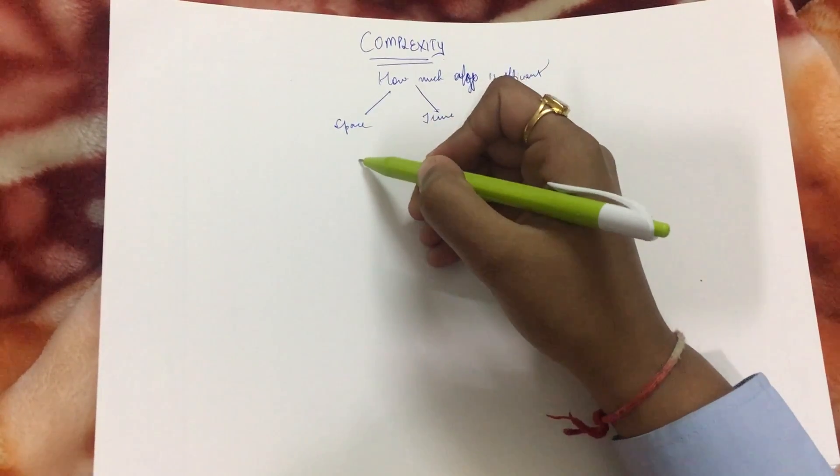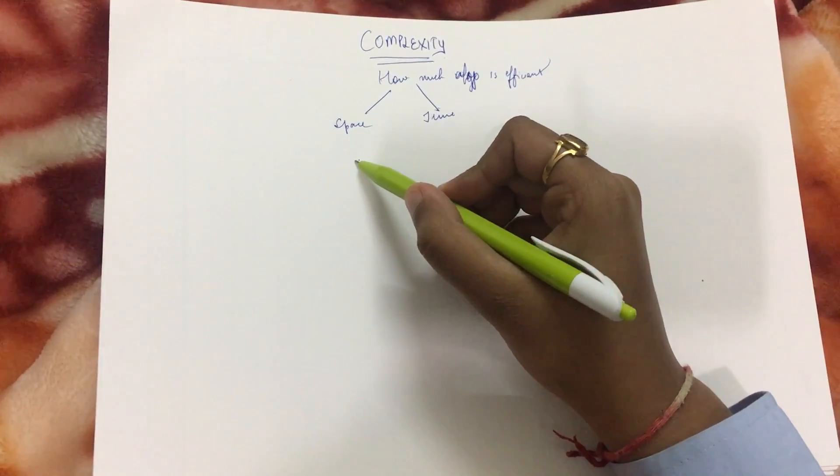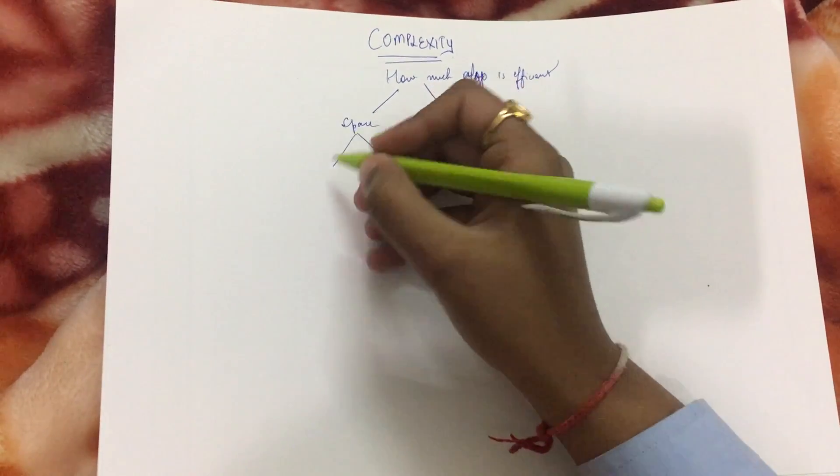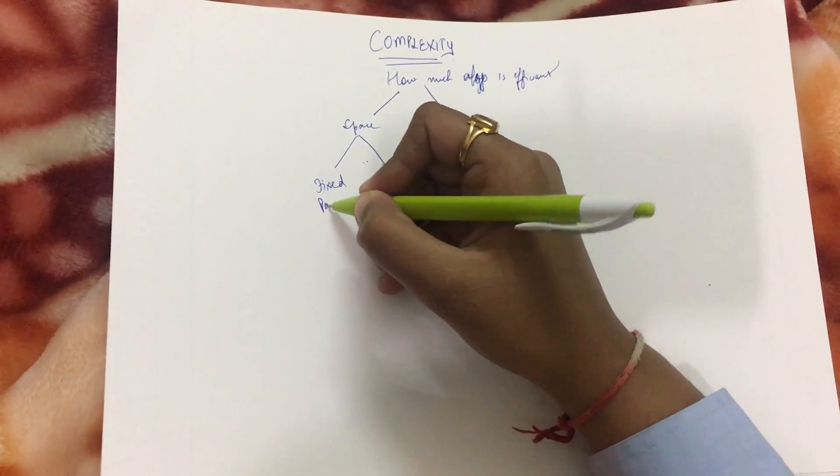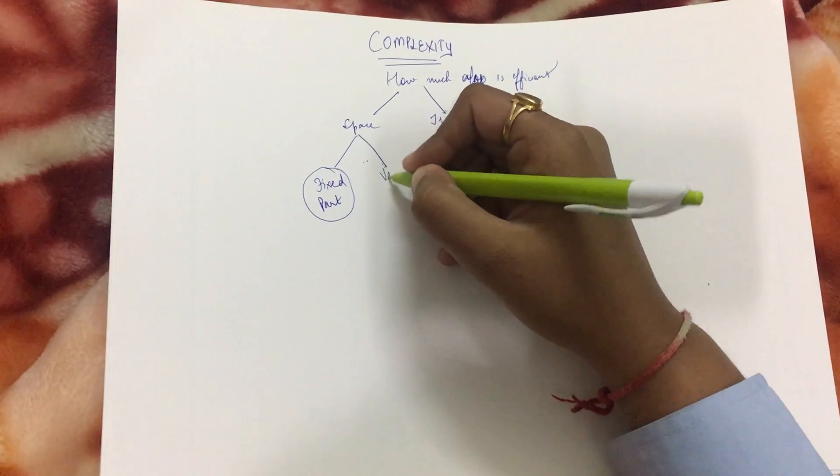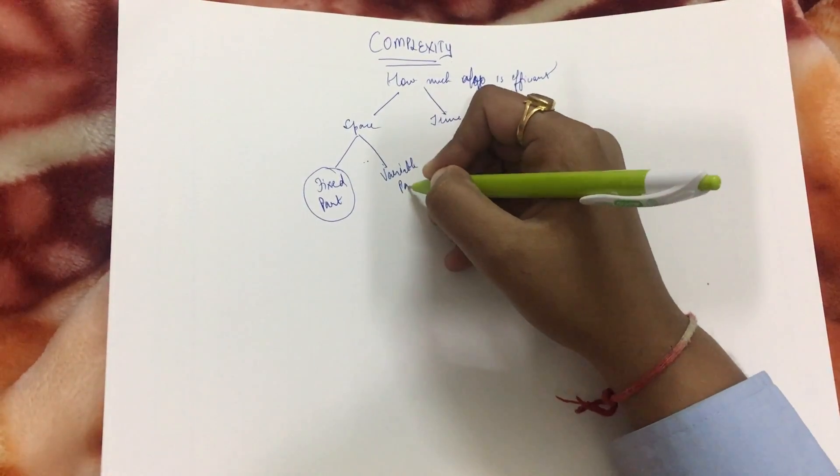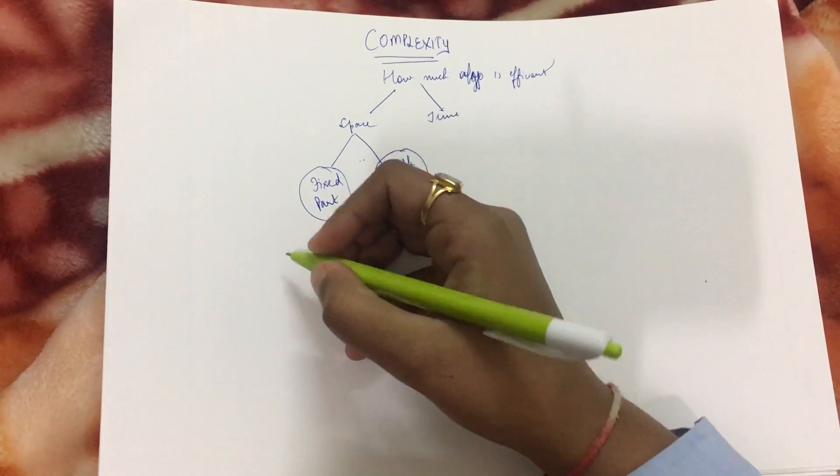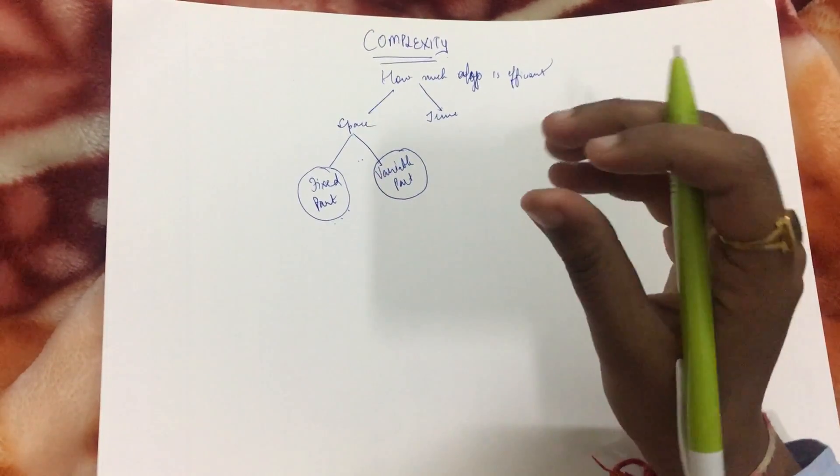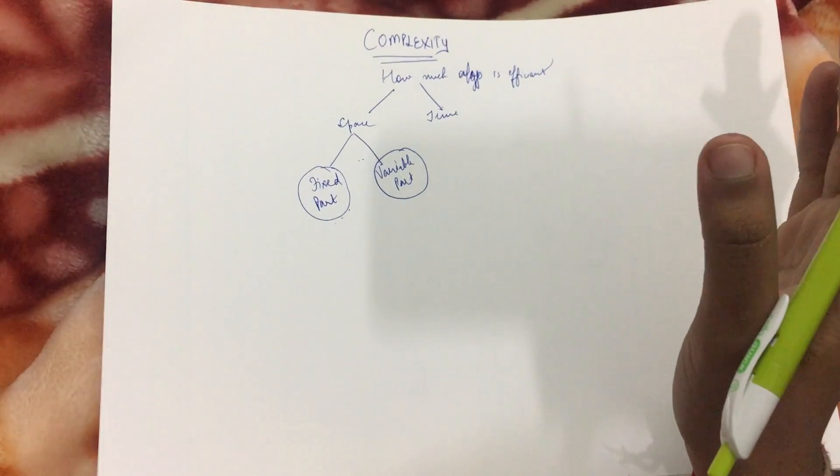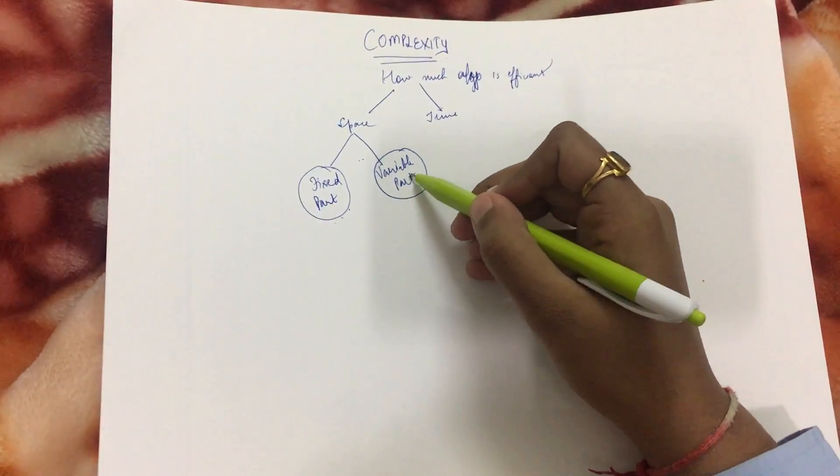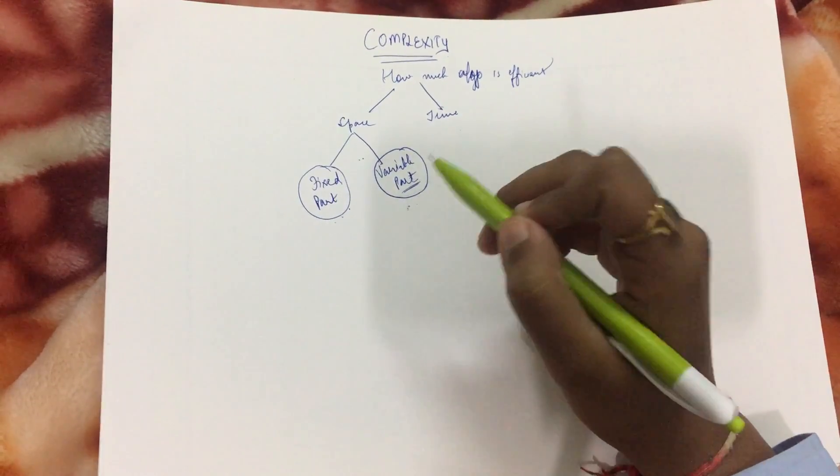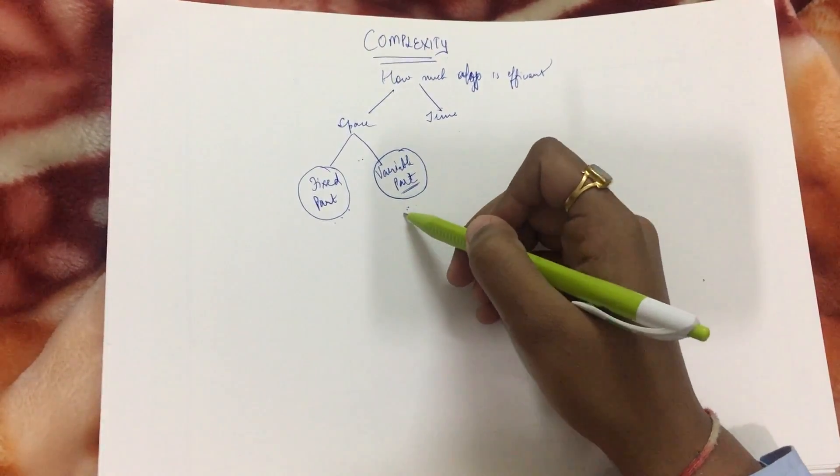Space complexity means how much memory the algorithm is taking in the system, and time means how much time it is taking to execute. Space complexity is further of two types, or you can say it has a fixed part and a variable part. The fixed part is when we define variables like int a and int b that occupy particular spaces in memory. The variable part is when we have dynamic allocation of memory where we initially don't know how much memory it will take.